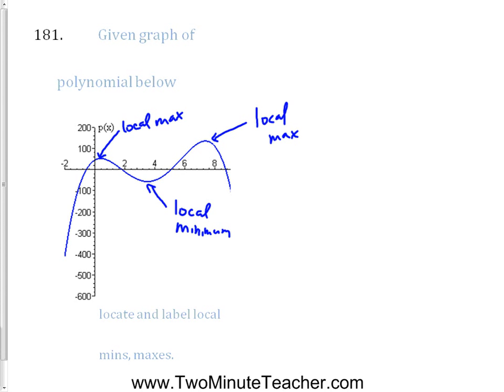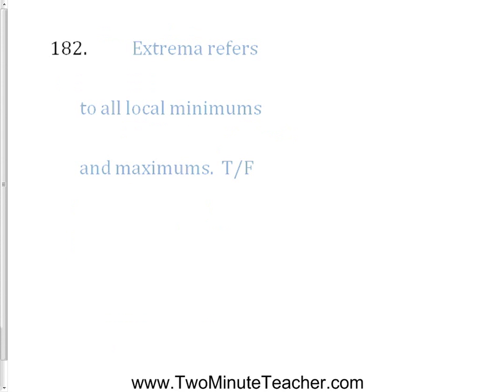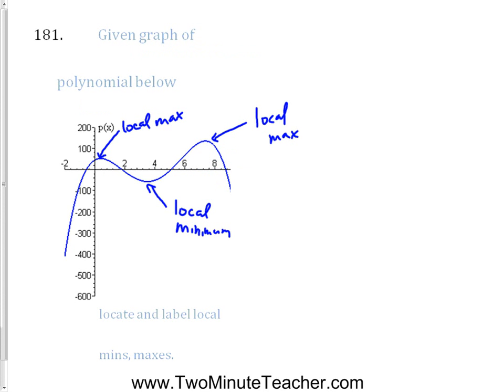If this were in my graphing calculator, I could use maximum and minimum under second, calculate — it's by the trace key — and that would tell me exactly where those points are. Problem 182: extrema refers to all local minimums and maximums. That is true. So looking at that previous graph, those points are all extrema — the local minimums and maximums. Only certain books refer to it that way, but if asked for extrema, they want all the local mins and maxes.